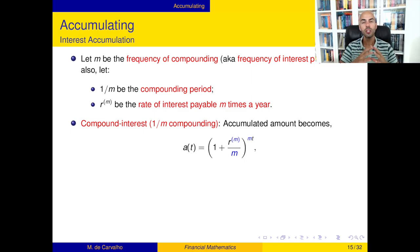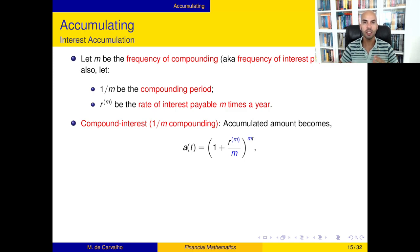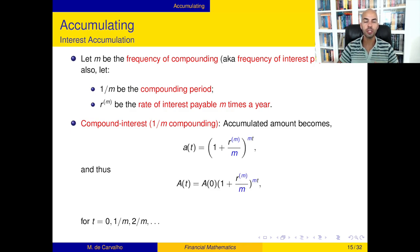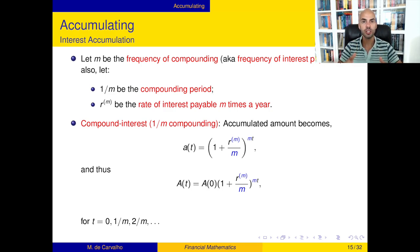What we've just seen allows you to see how a single unit of capital grows over time with compound interest. When you want to see how much you accumulate in total, you use the amount function, which again consists of the initial principal times the accumulation function. This expression describes the law of motion of your accumulation over time.